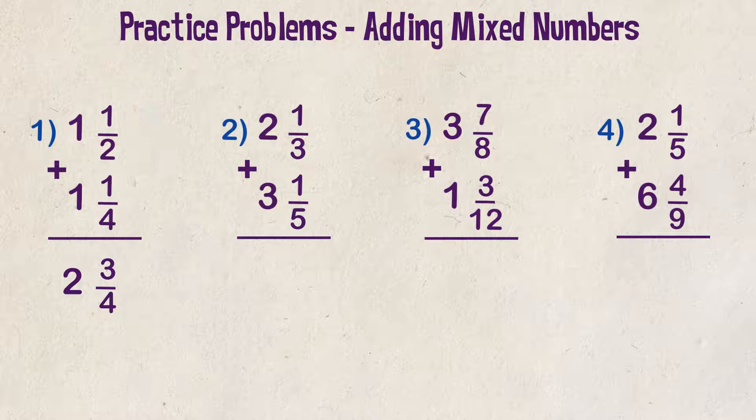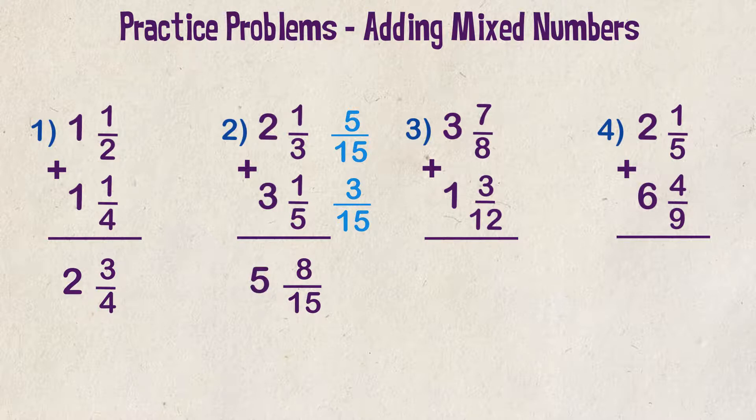Example two: two and a third plus three and a fifth. Let's line up our numbers and work on getting the fractions into common denominators. Our current denominators of three and five can be converted into a common denominator of 15. It's the lowest common multiple of both three and five. We multiply the first fraction by five, numerator and denominator, and we get five fifteenths. We multiply the second fraction times three and we get three over 15. We then add the numerators together and our newly formed equivalent fraction is eight over 15. Next we add the whole numbers, two plus three and we get five. The final answer is five and eight fifteenths.